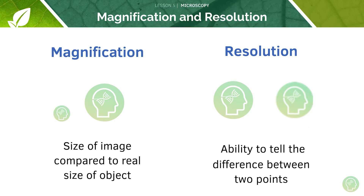What you need to know is the difference between these two terms. Magnification is the size of the image compared to the real size of the object. Resolution, in contrast, is the ability to tell the difference between two points. Use the dot analogy: if something has high resolution you can differentiate between two dots; if something has low resolution the image will be much more blurry, so those dots will fuse into one.